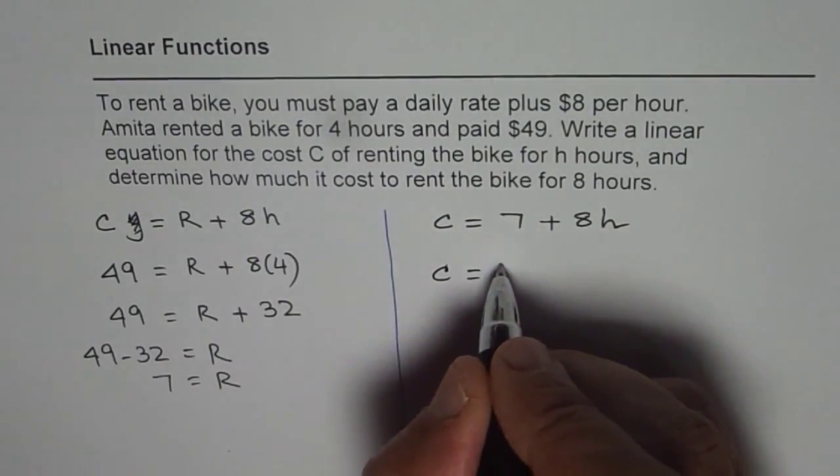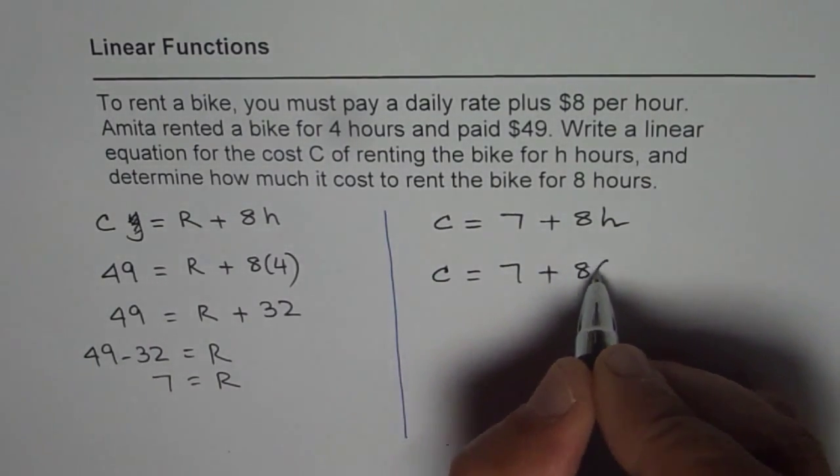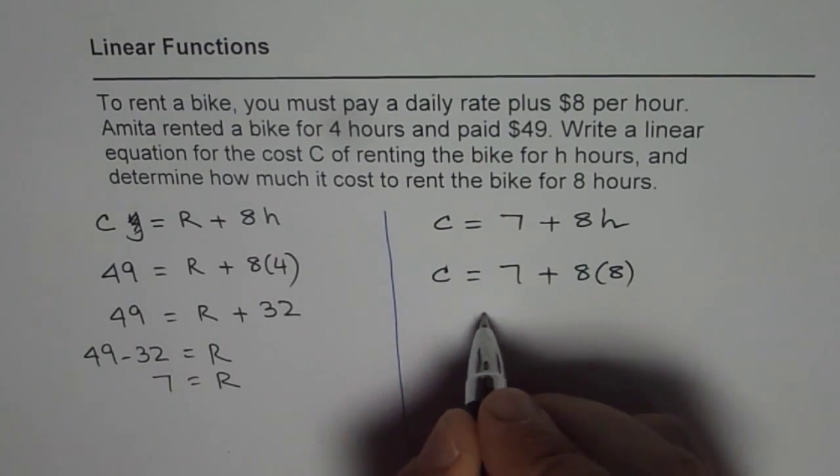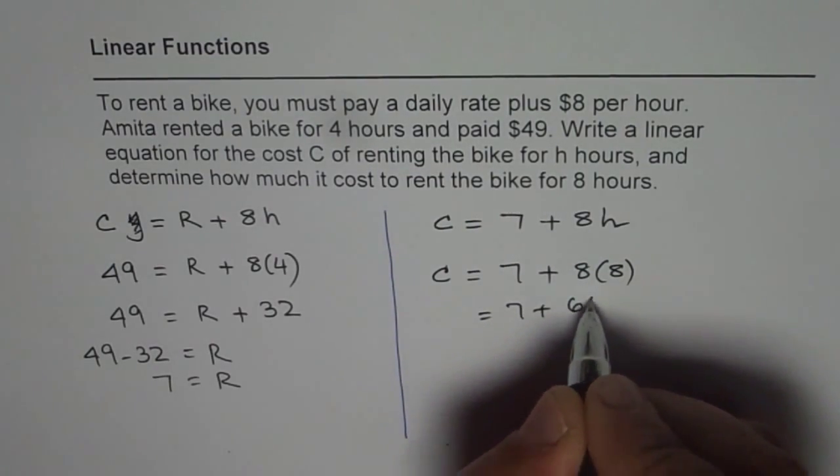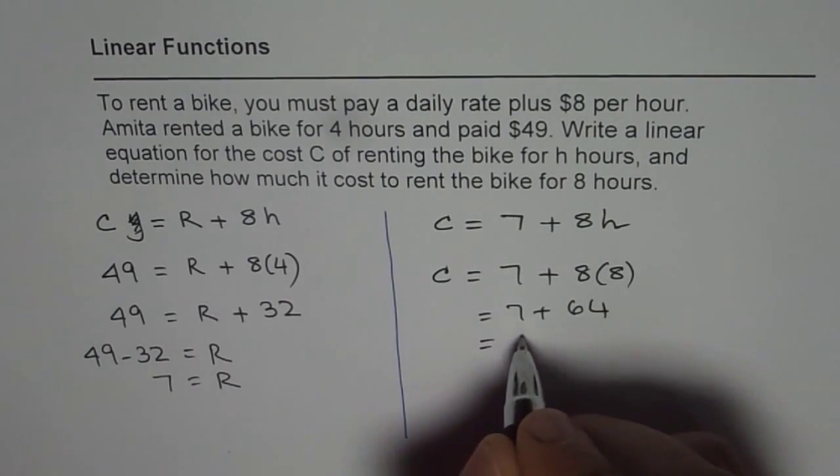So cost for renting the bike for 8 hours should be 8 times 8 plus 7, which is 7 plus 64, correct?